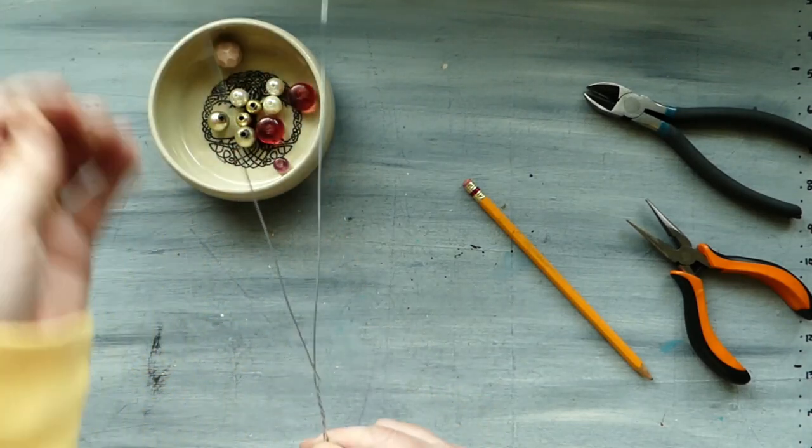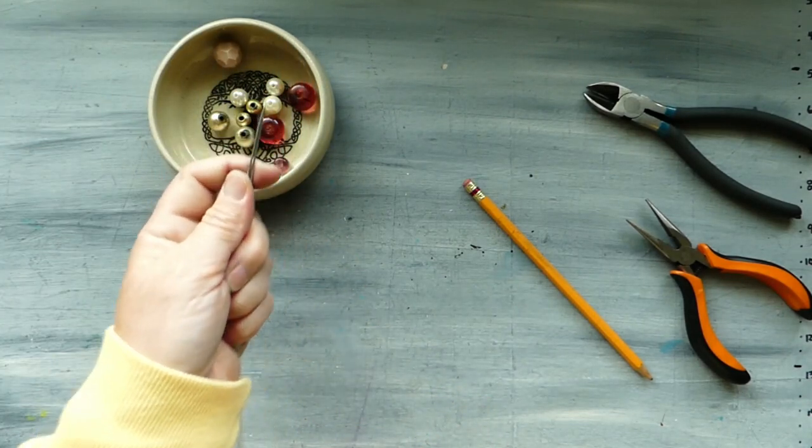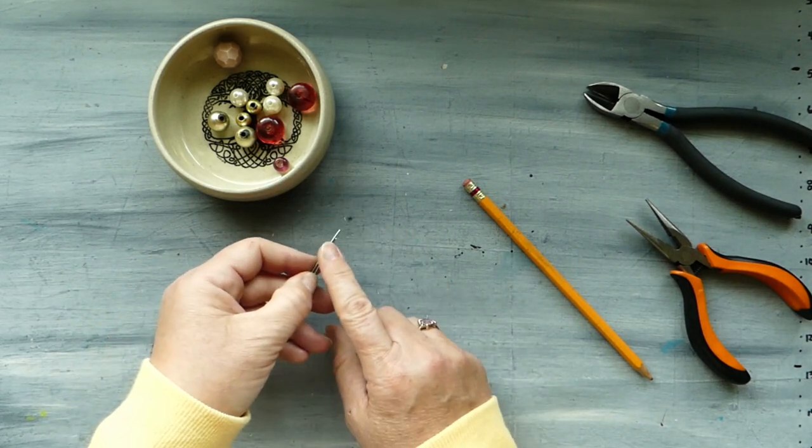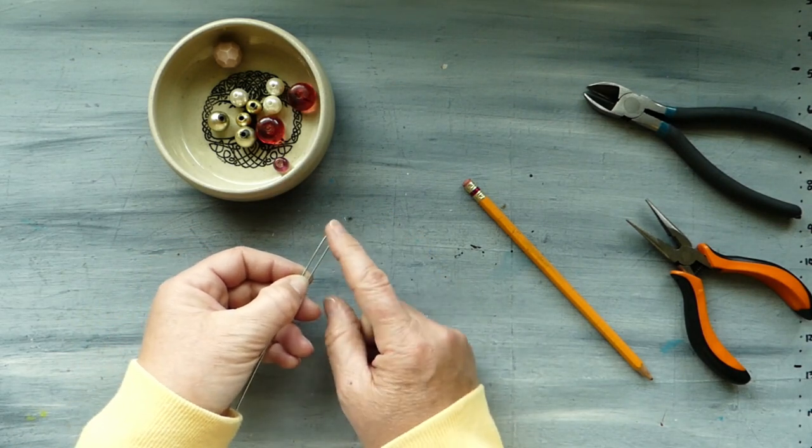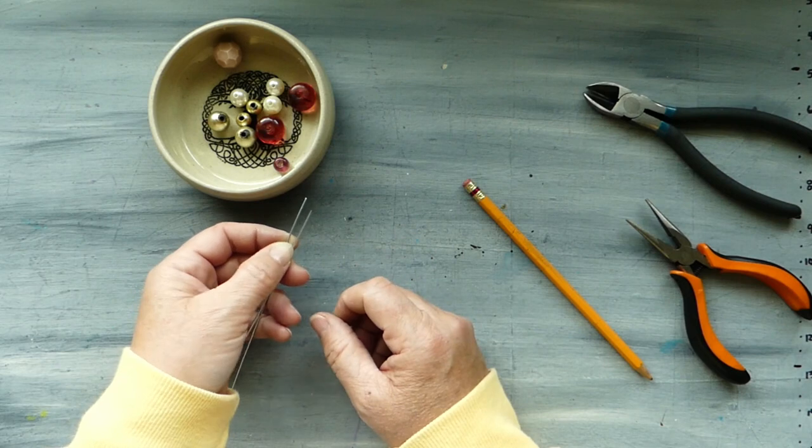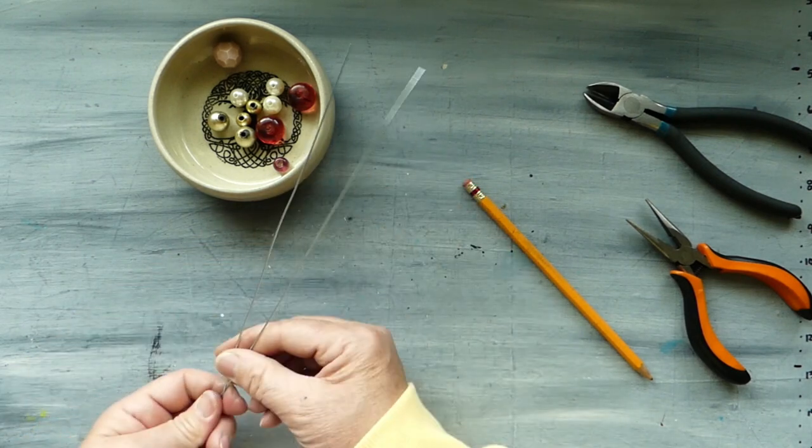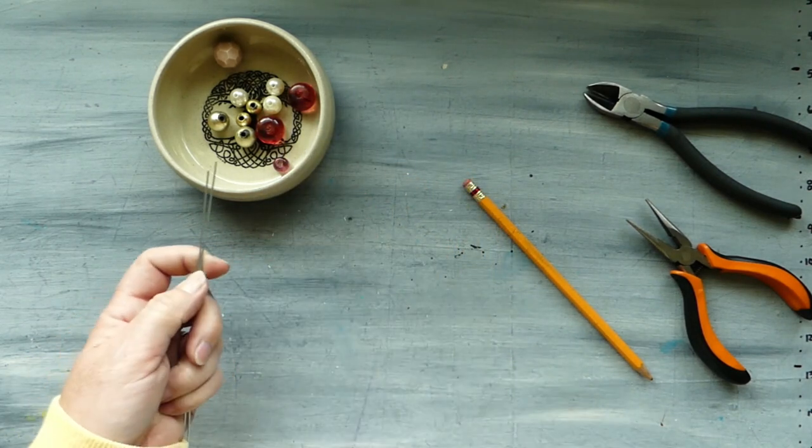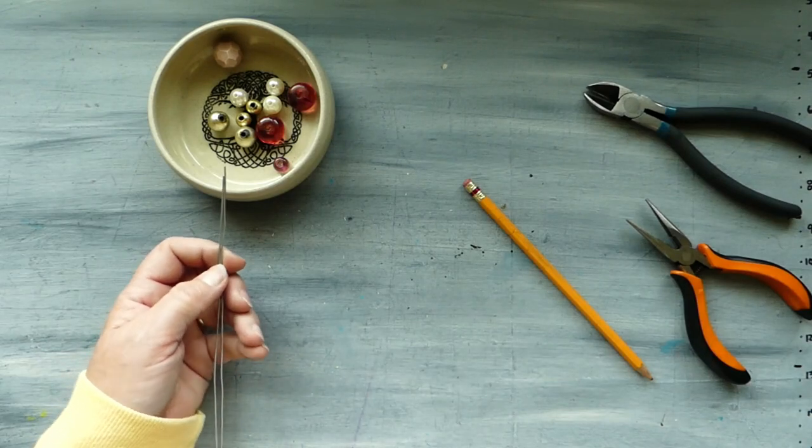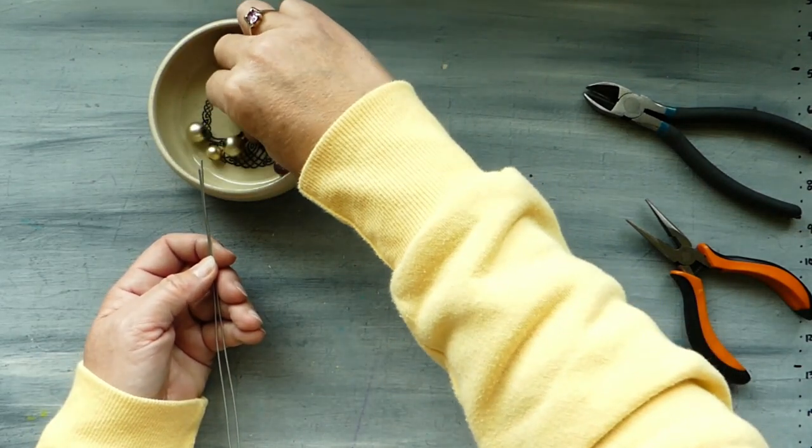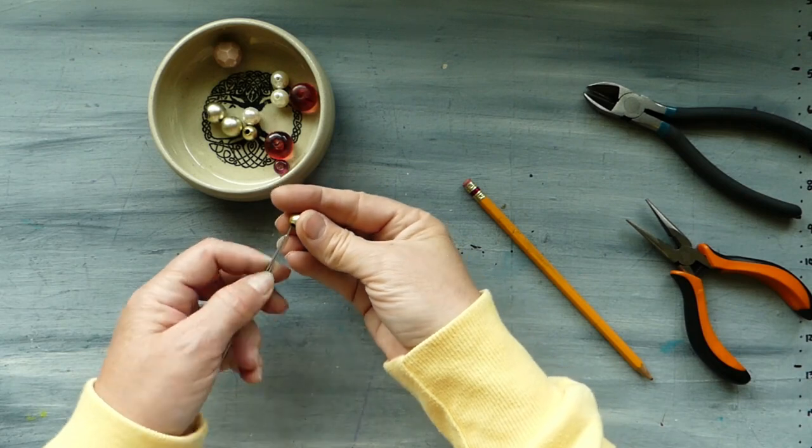And then we're going to just pull those two wires together. Now we've got a bit of difference here as far as the length of the wire go, and that doesn't matter ultimately. So looking at our beads, we want to decide what it is that we are going to use, and I think I'm going to go with a gold first off.